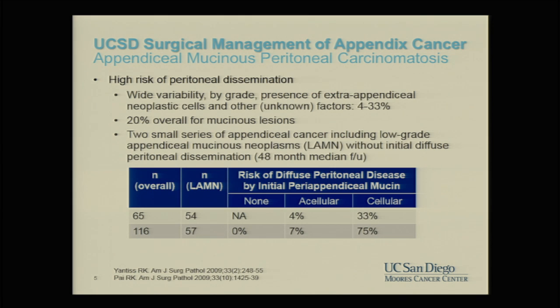Risk factors include presence of extra-appendiceal neoplastic cells and other mostly unknown factors. If you look at studies, the risk of a mucinous tumor patient developing PMP or carcinomatosis is variable — 4 to 33 percent or even higher in some studies. Some series estimate about 20 percent overall for mucinous lesions. Two series of 65 and 116 patients highlight the variability and risk of peritoneal dissemination.